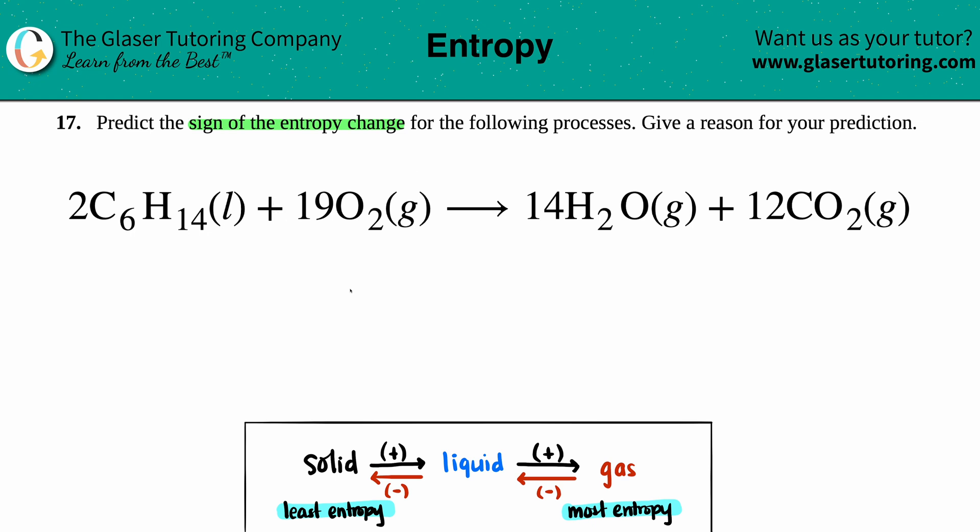plus 19O2 gas, which will give us 14H2O gas and 12CO2 gas. Okay, now keep in mind we're trying to find the change in entropy, right? A change is always a delta value, so the triangle. And entropy, which we will see when we start doing the math later down the road, delta S, or I just